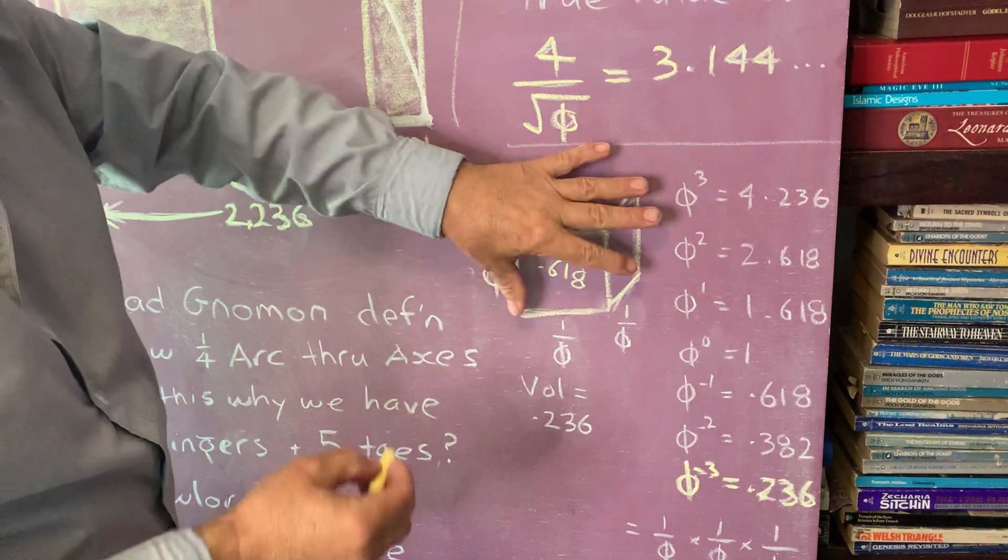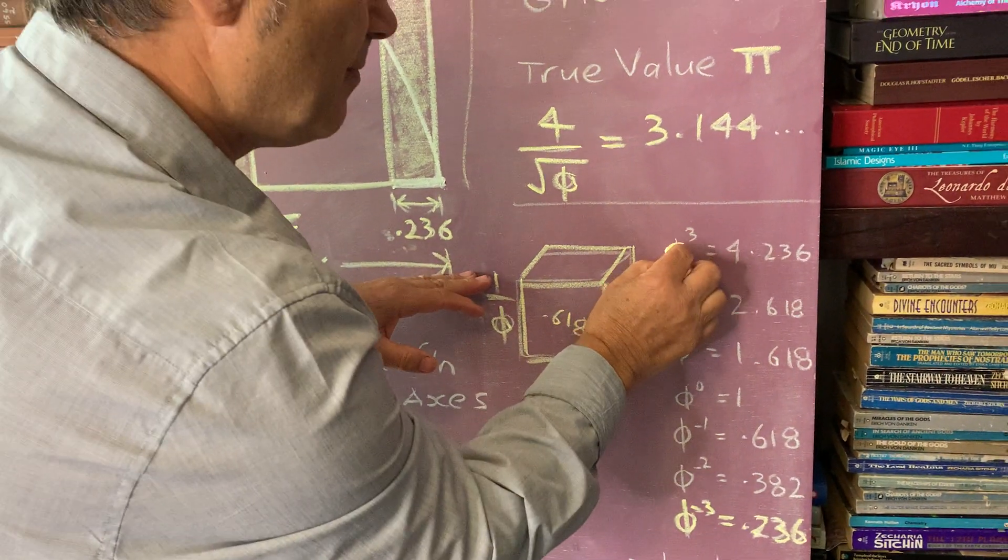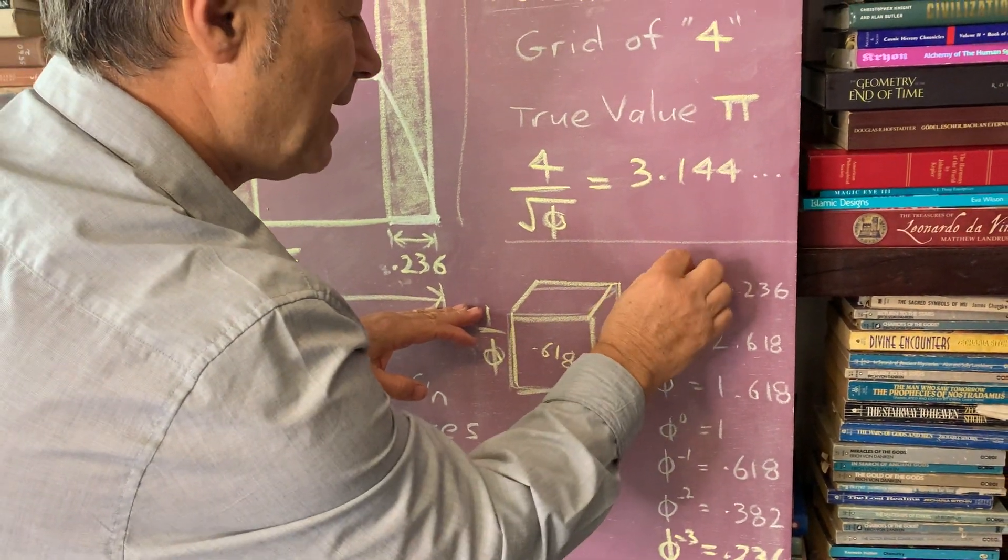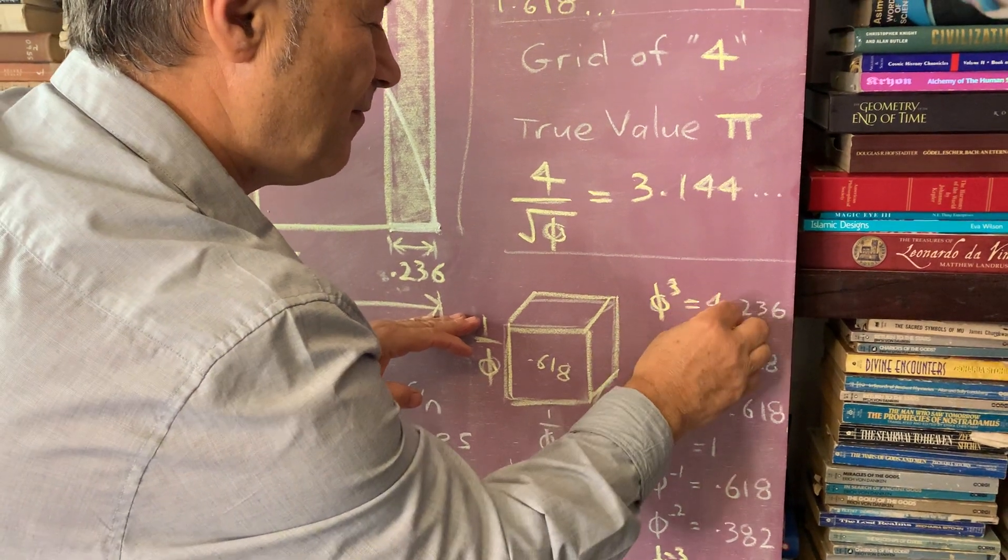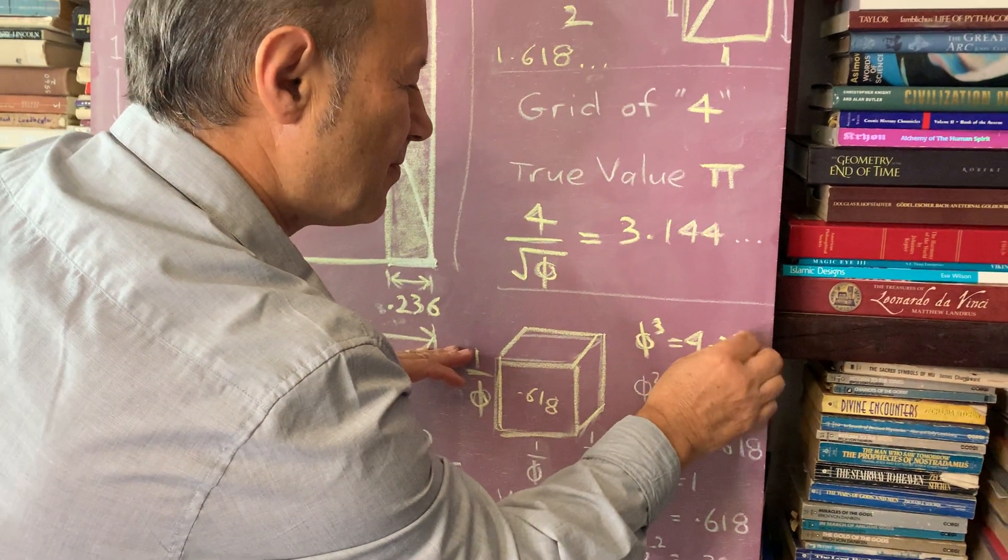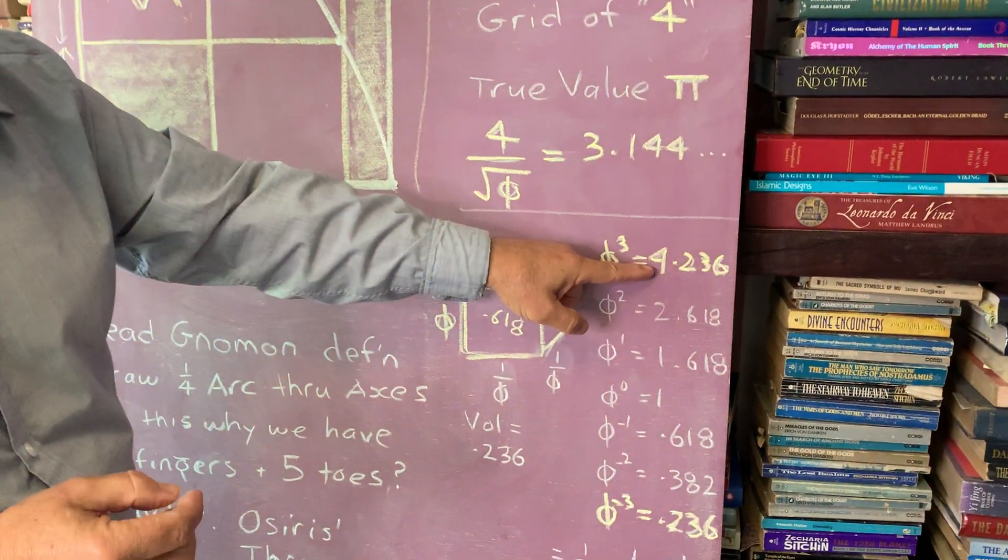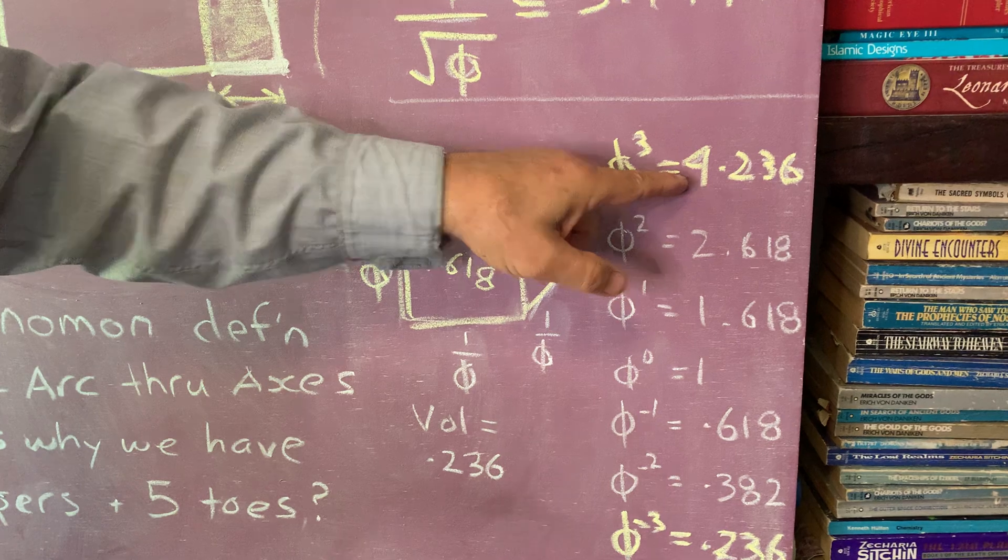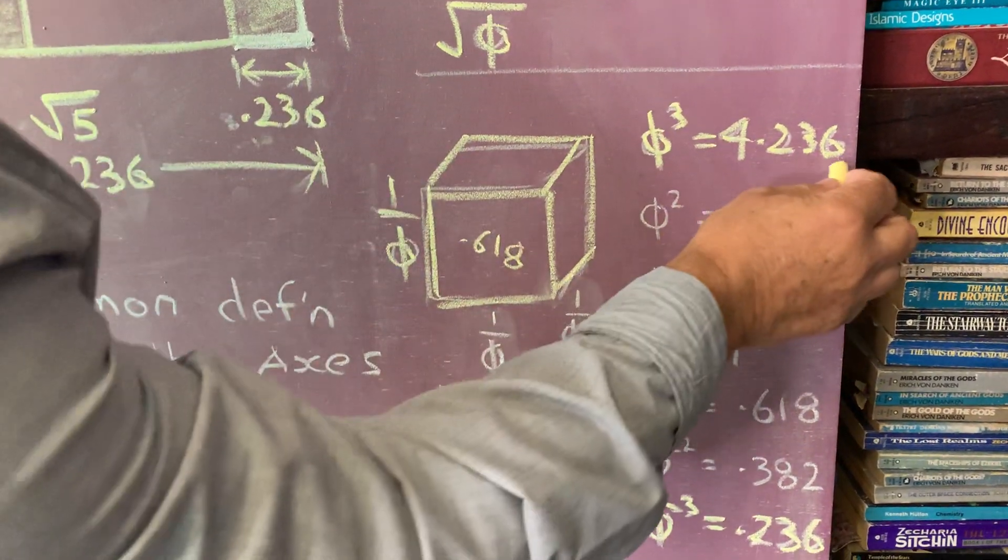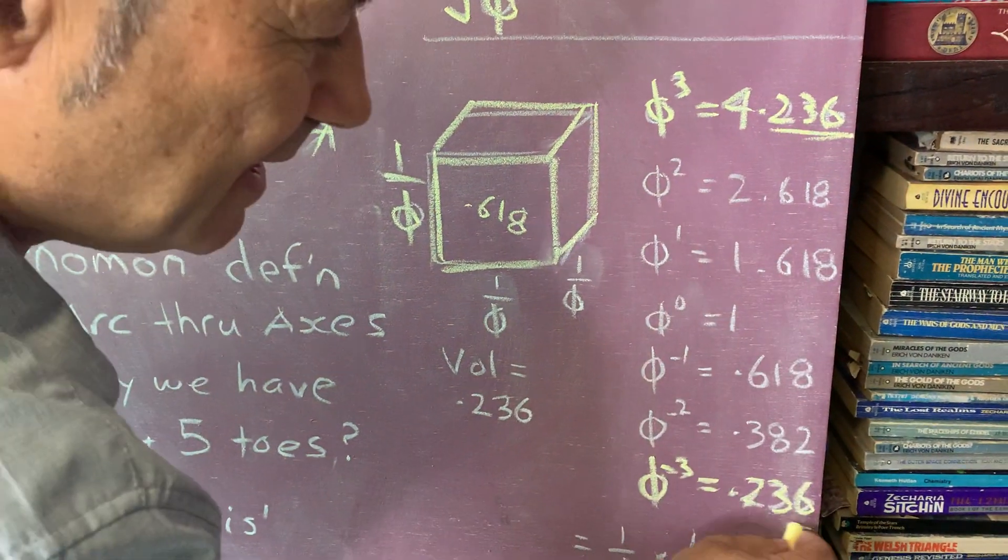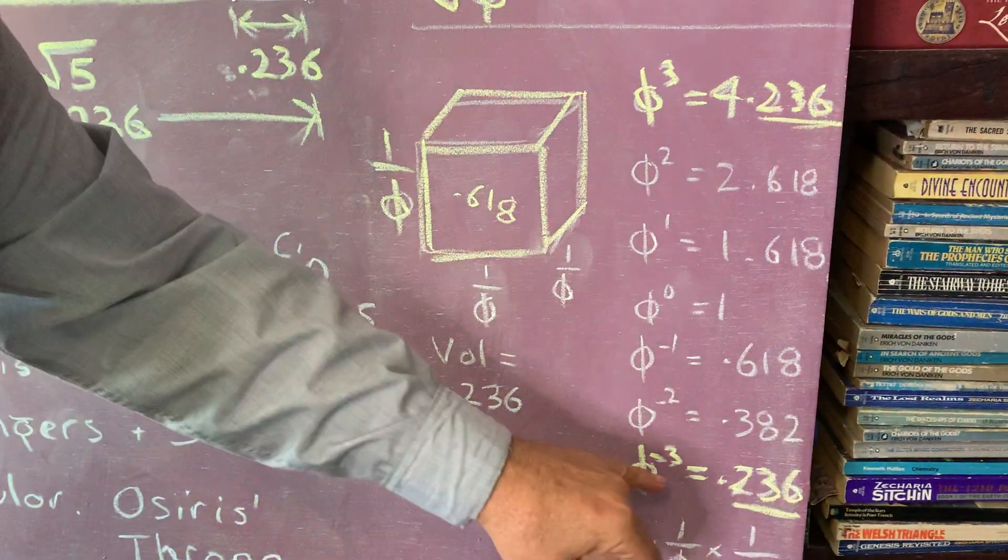If we looked at phi cubed, when we cube 1.618, we get 4.236. Did you notice that when we cube phi, we get 4.236, and that distance here, the 2.36, oh sorry, the 0.236 is the phi to the minus 3, which is 1 on phi.